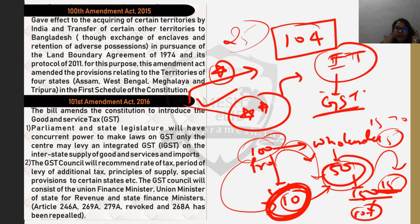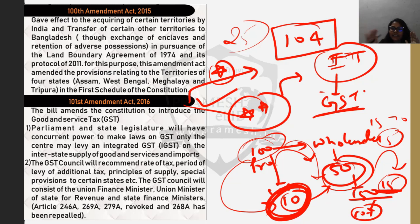Under GST, whatever tax has already been paid — say ₹10 — it will be deducted from the final tax, so it becomes ₹15 minus ₹10, which is ₹5. This removes the tax-on-tax cascading effect. As a result, the final price of items will reduce, and you will find that most items' rates have decreased because of the removal of these cascading indirect taxes. GST is also called 'one nation, one tax.'